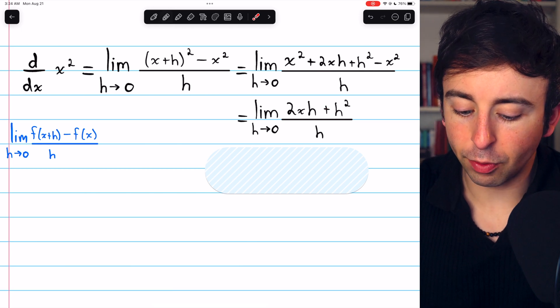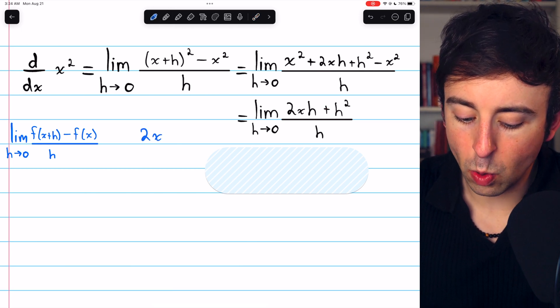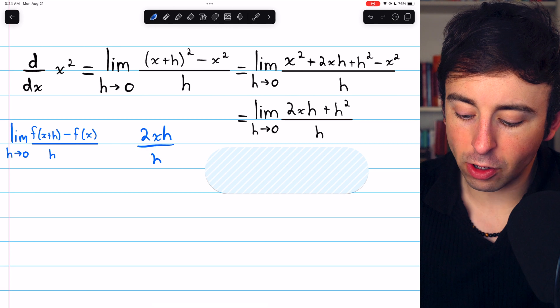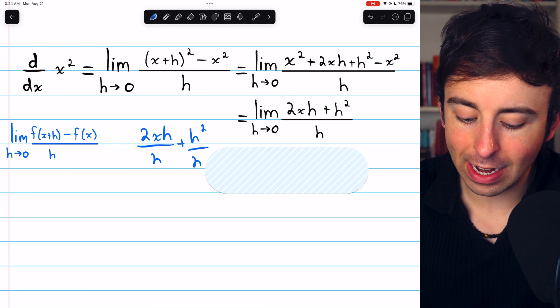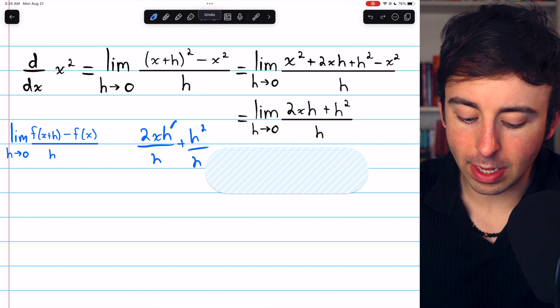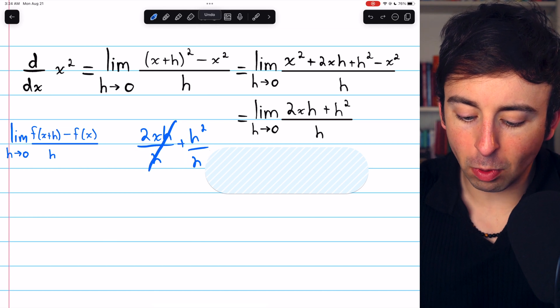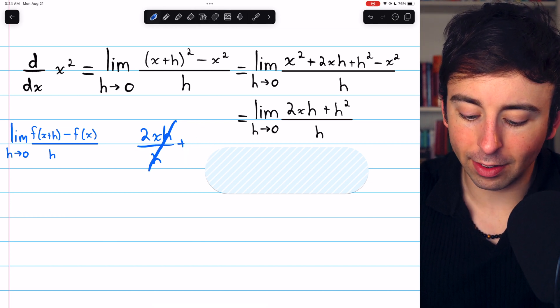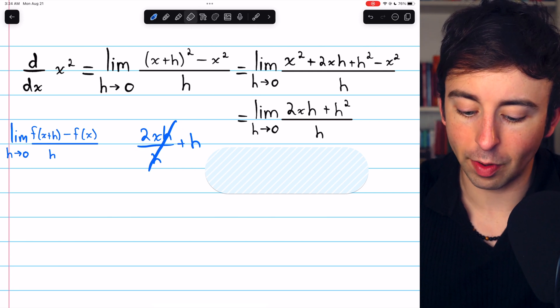You can imagine splitting up this fraction into 2xh over h plus h squared over h. And on the left, the h's cancel out. And on the right, a factor of h cancels out and leaves just a single factor of h.